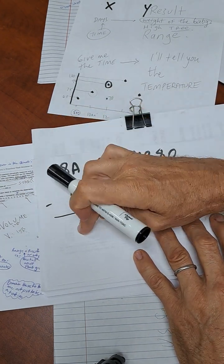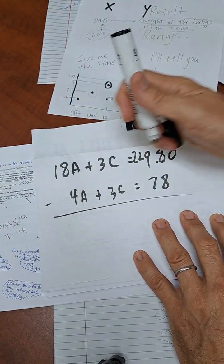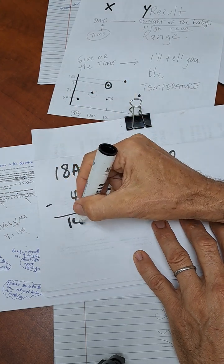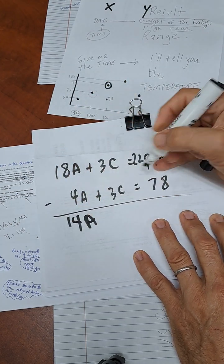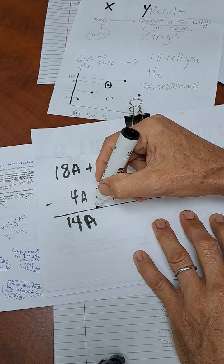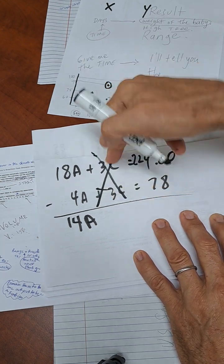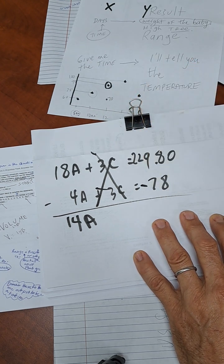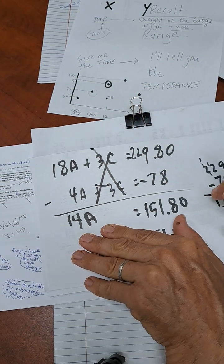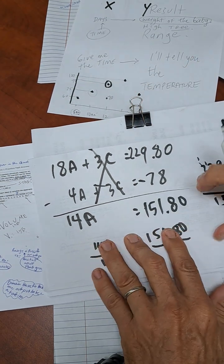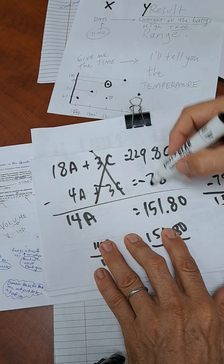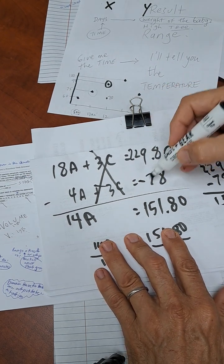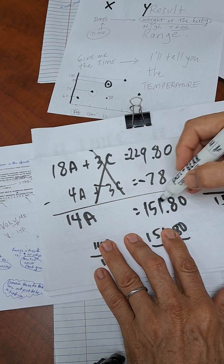Now I have to subtract. So I'm subtracting here. I got 14A. Subtract here. Goodbye. Because this is a positive three, this is a negative. And now I subtract here. And through the magic of jumping through time, we find out that when we subtract the 229 minus 78, we get about $151.